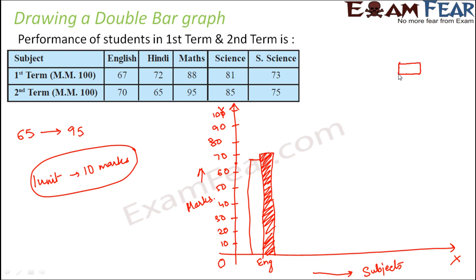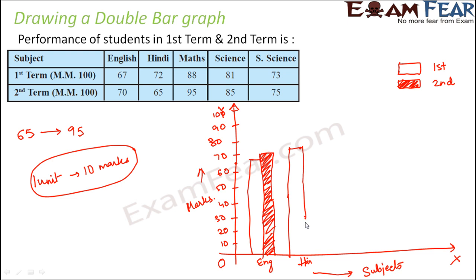It is important to note that the unshaded bars represent first term and the shaded bars represent second term, so viewers can easily understand what the data represents. Now for Hindi: the first term score was 72, which is slightly above 70, and the second term score was 65. Since the second term bar needs to be shaded, we shade the bar at 65. That gives us the double bars for Hindi.